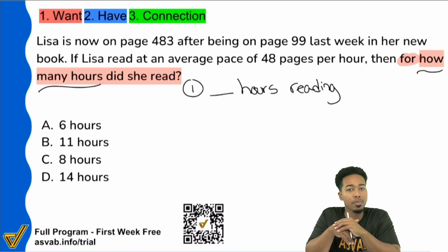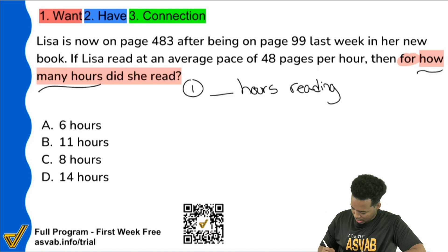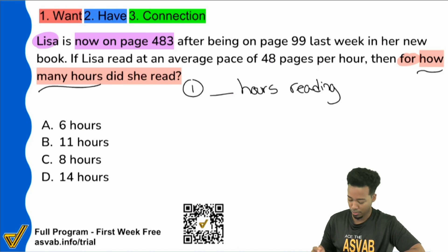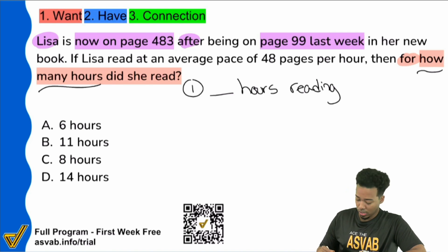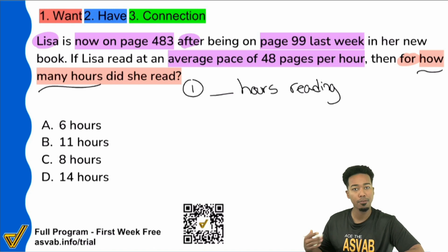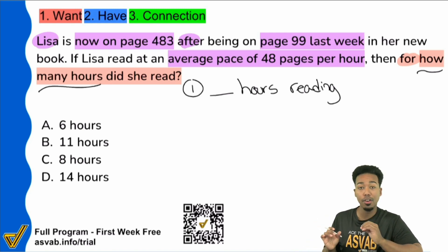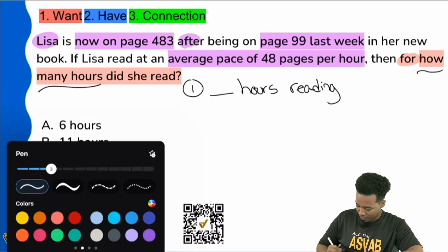Let's look at the information we have. It says Lisa is now on page 483 after being on page 99 last week in her new book. If Lisa read at an average pace of 48 pages per hour, then for how many hours did she read? Let's take all this information down and understand that this is not a distance rate time problem, although you could frame it as one, but this is better suited for a y equals mx plus b or a linear equation and I'll show you how.